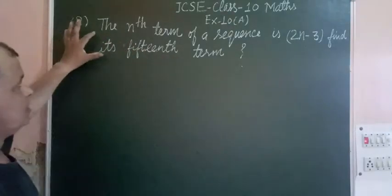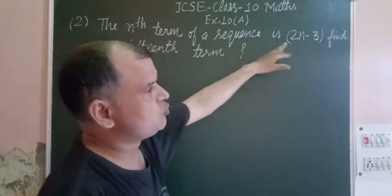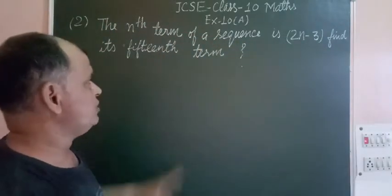The question states that the nth term of the sequence is 2n minus 3. Find its 15th term.